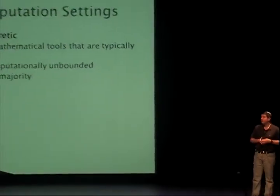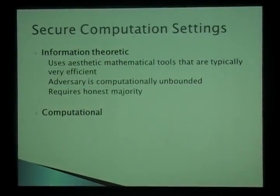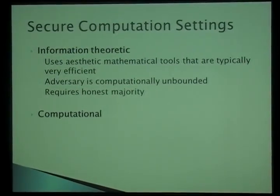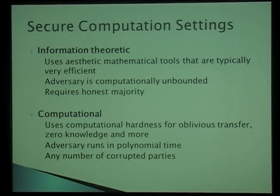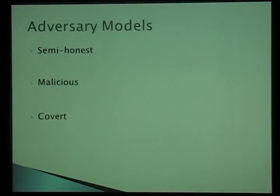In the setting of secure computation there are two main classes of protocols: information-theoretic and computational. In the information-theoretic setting we use elegant mathematical tools that are typically very efficient, and we obtain security even for a computationally unbounded adversary. However, we require an honest majority — in fact even a two-thirds majority — and it's impossible to achieve this for a dishonest majority. In contrast, in the computational setting we use computational hardness and heavy tools such as oblivious transfer, zero-knowledge proofs, and commitments. The adversary is limited to polynomial time, but the advantage is that we can obtain security for any number of corrupted parties, at least if we're willing to forgo fairness.